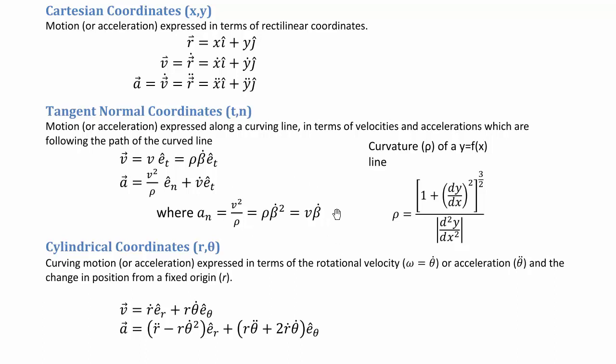The best litmus test for whether normal acceleration exists is: what does the path of the particle look like? If it's a linear path, the normal acceleration equals zero because there's no time rate of change of the direction of the tangent axis. But if it's a curved path, it will always have a normal acceleration, regardless of whether velocity is constant or changing.